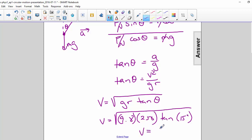So we find that v is equal to 25.6 meters per second.